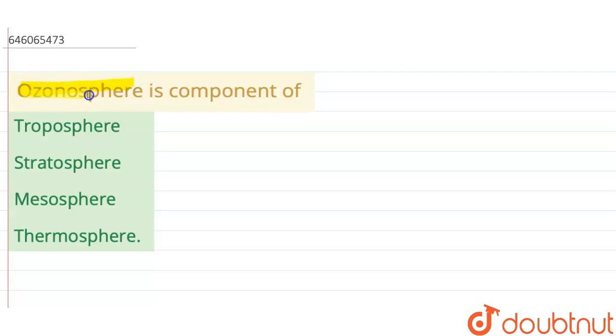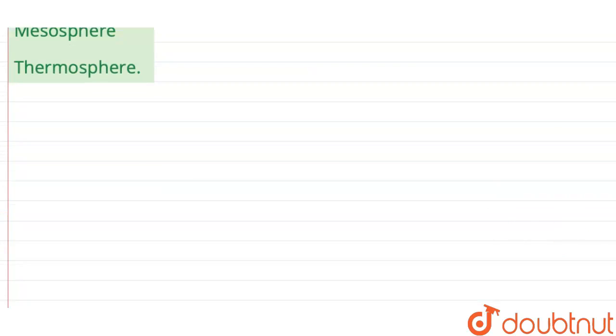component of... Okay, here we have to find that ozonosphere is the component of which of the following. Options are: first, troposphere; second, stratosphere; third, mesosphere; and fourth, thermosphere.